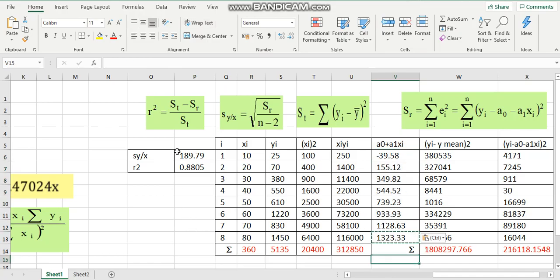Now, we can get the standard error. Just key in this formula. This is the square root. So, we key in the formula square root. Then, we get the answer.